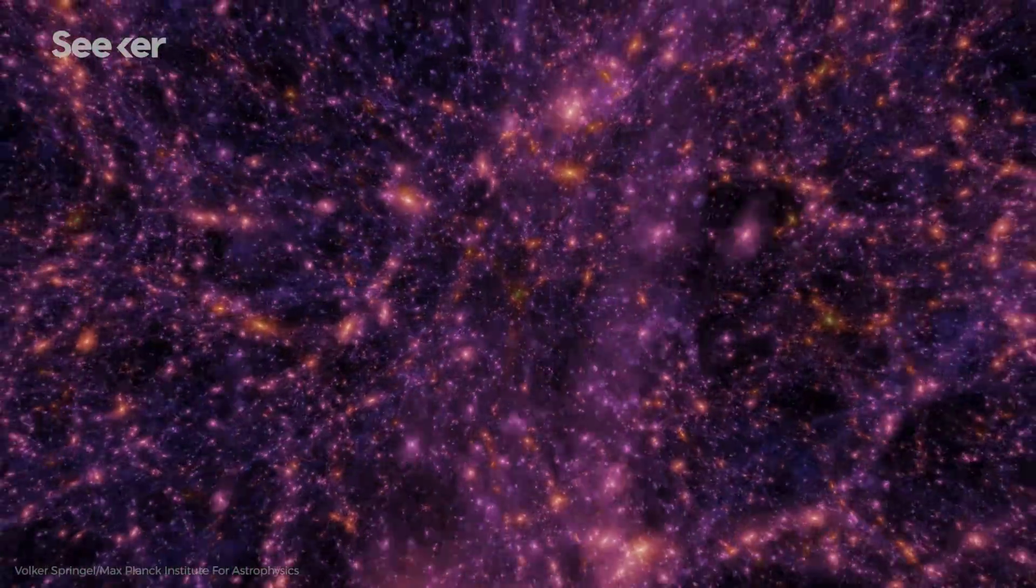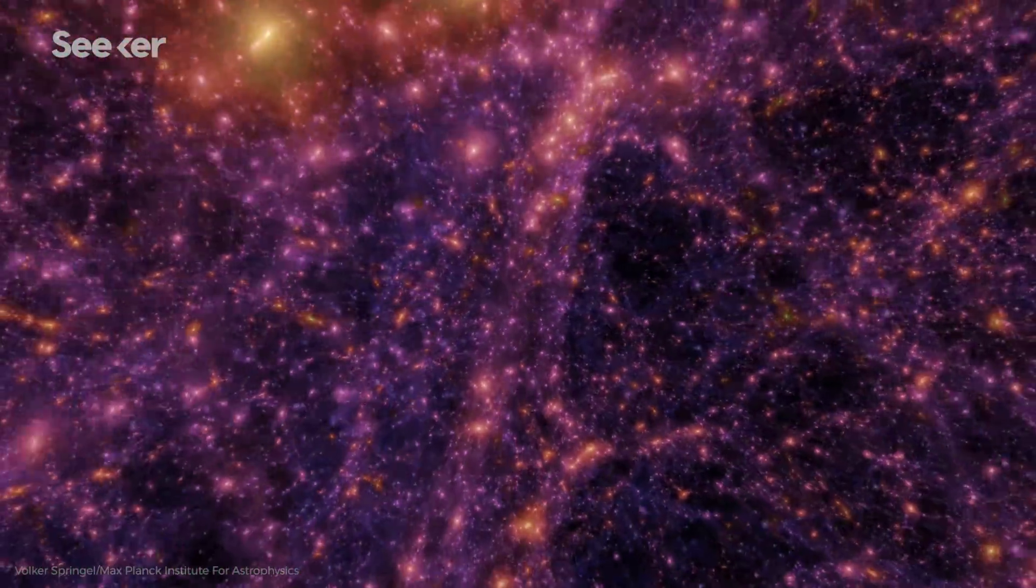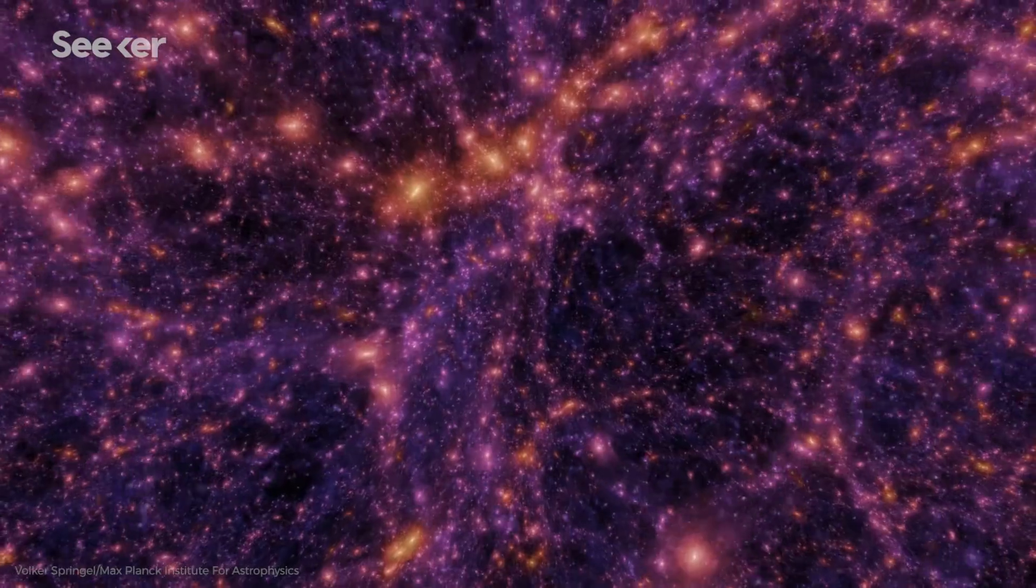In between those galaxies we think are filaments of dark matter linking them together in a mind-breakingly huge cosmic web. We suspected the gravity of that dark matter also attracted regular matter too, which had been turned into plasma after ultraviolet radiation from early stars separated atoms from their electrons.